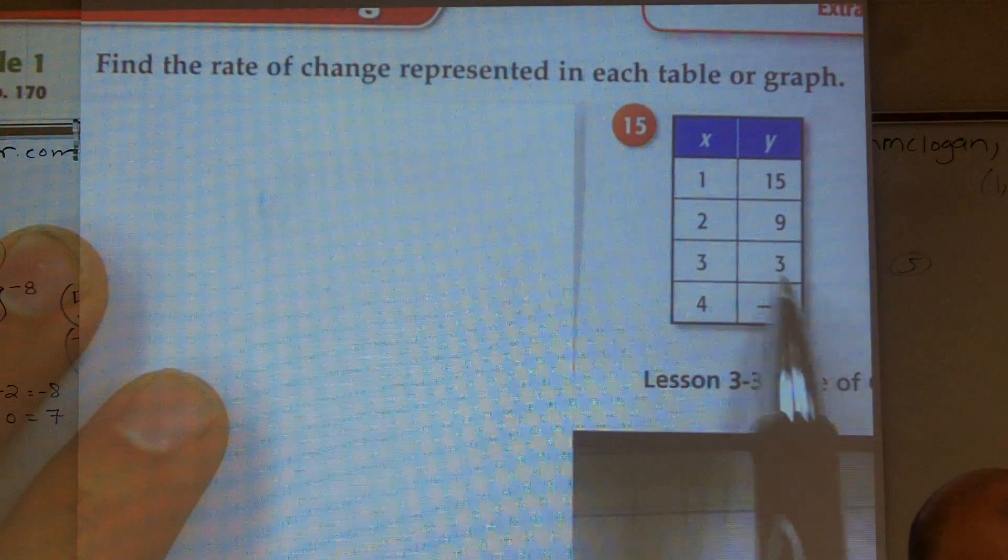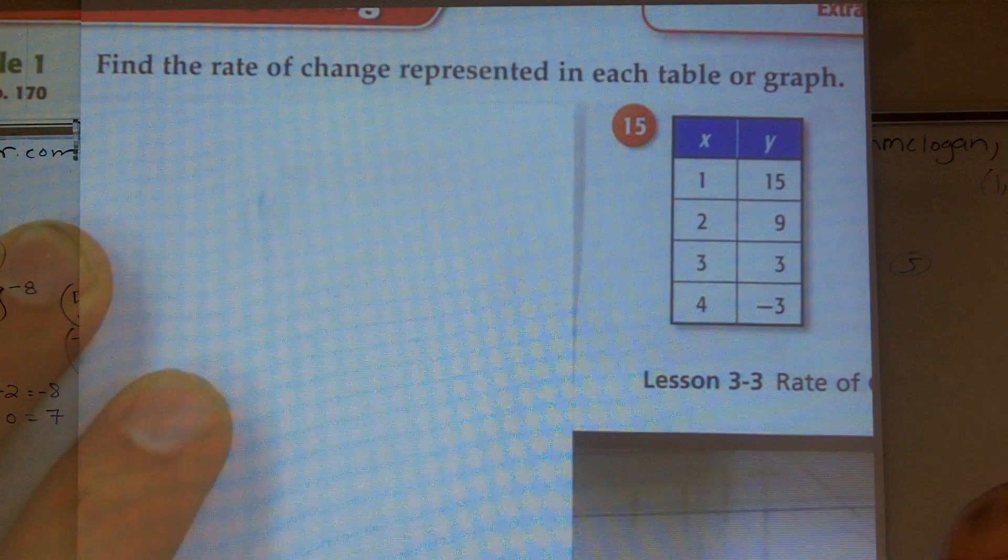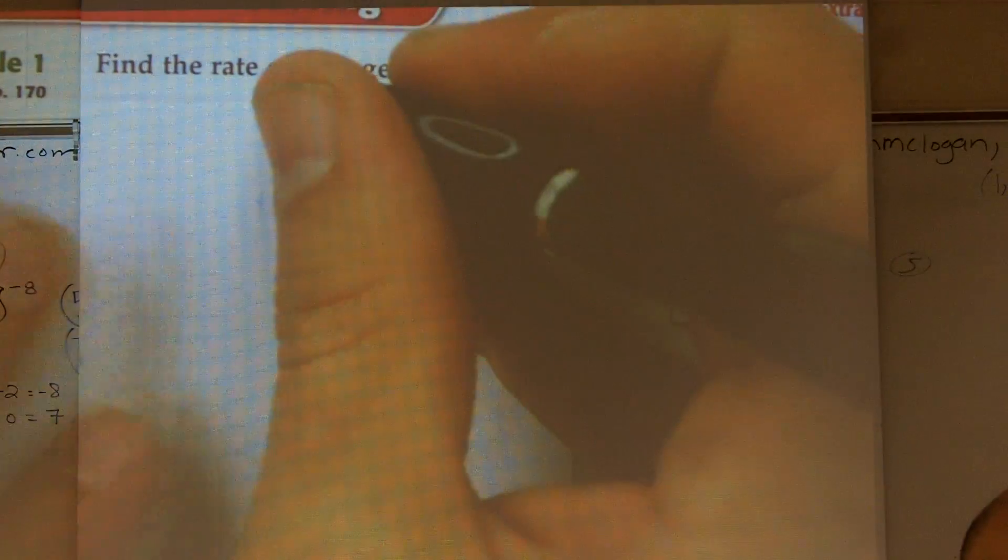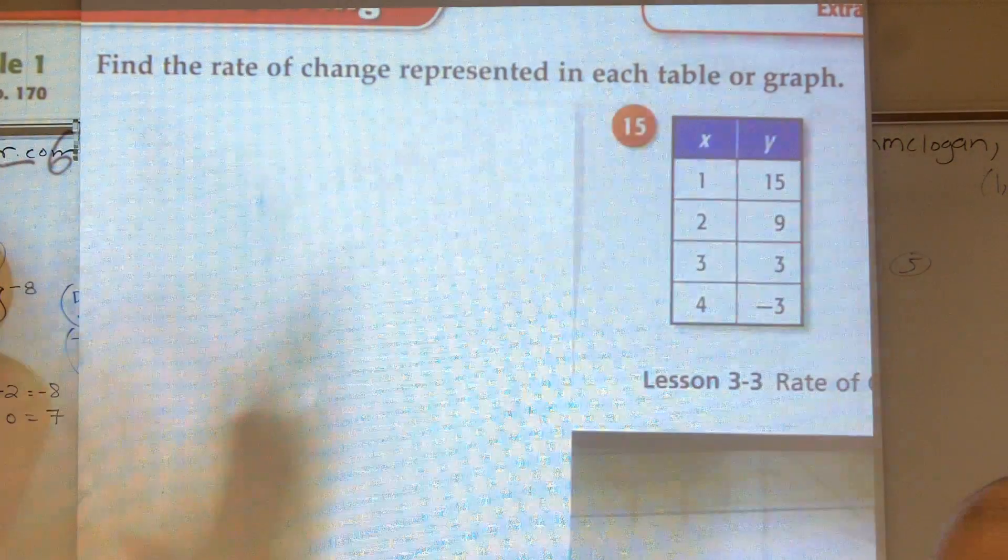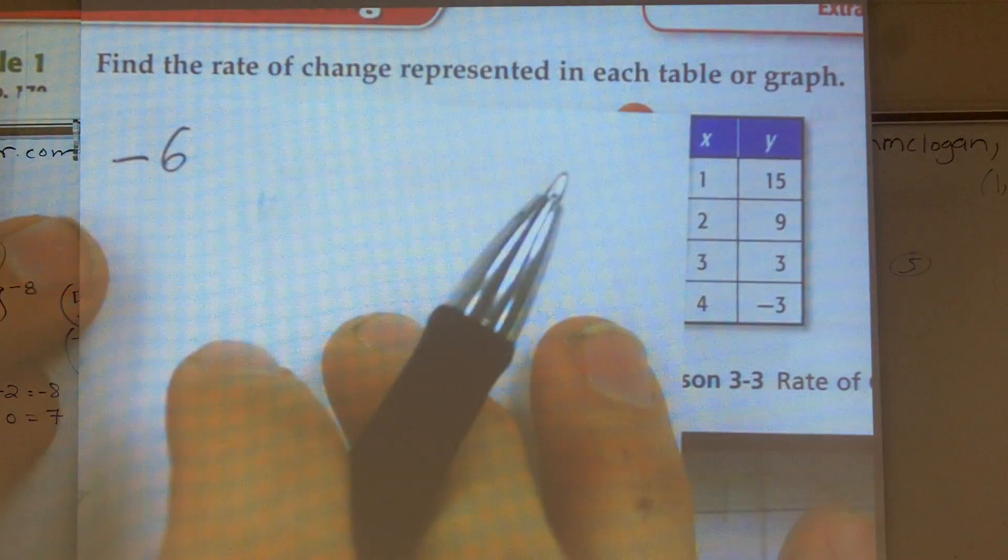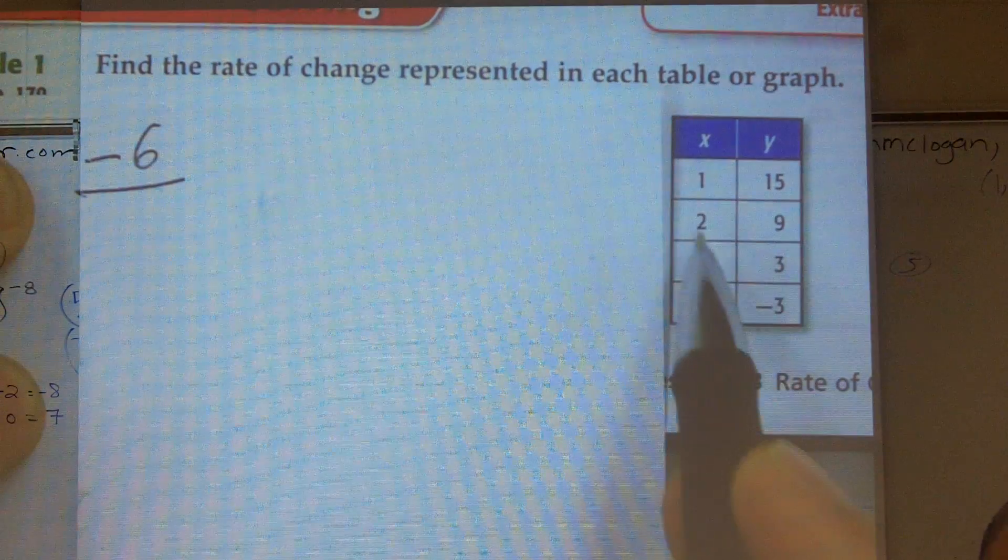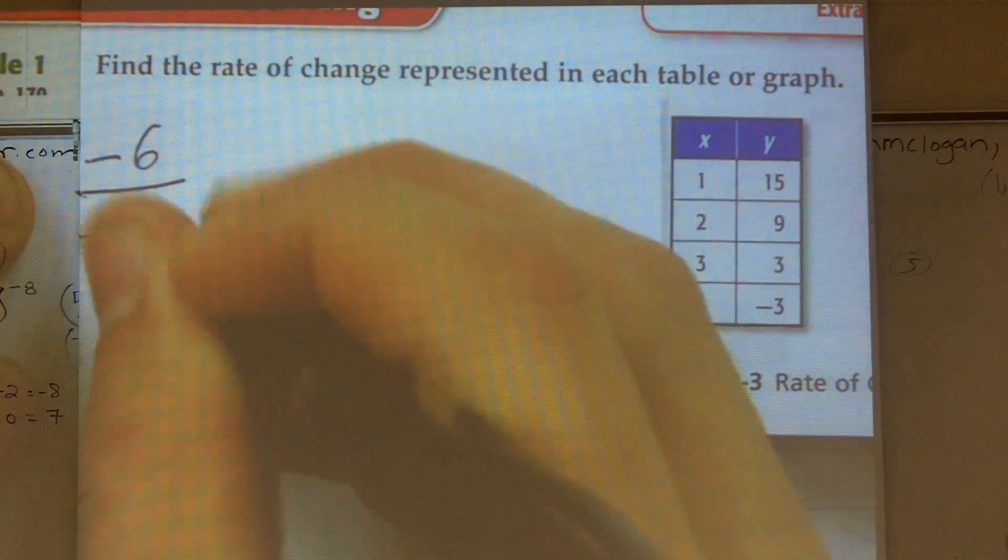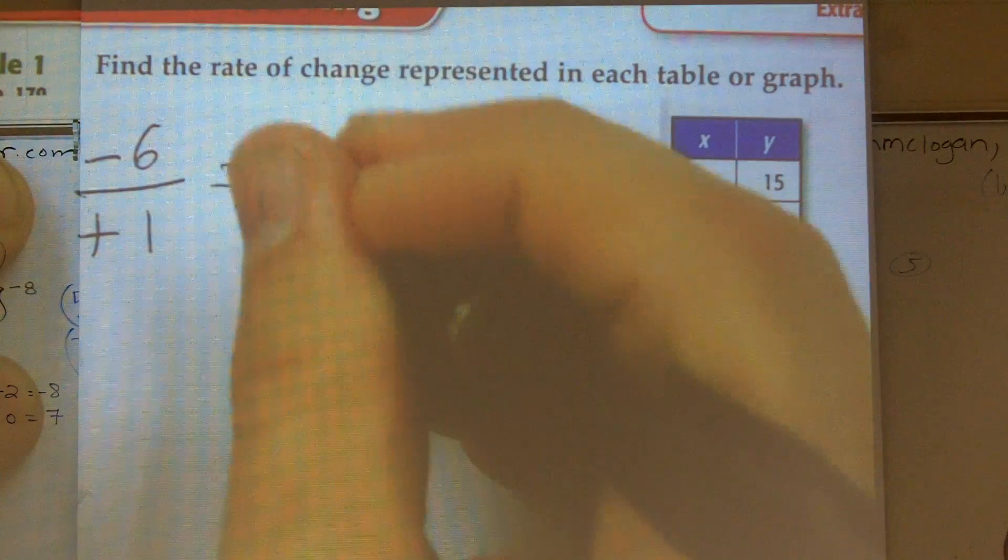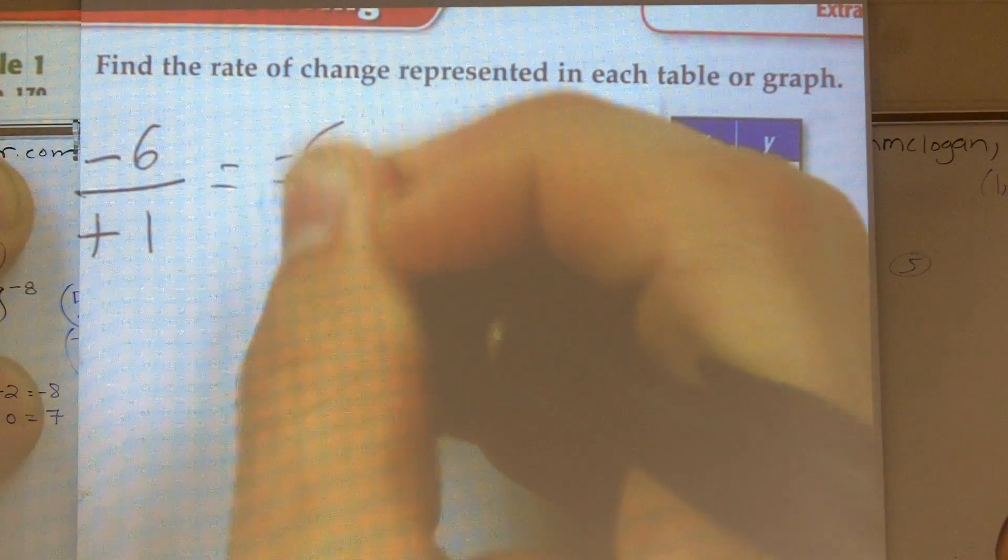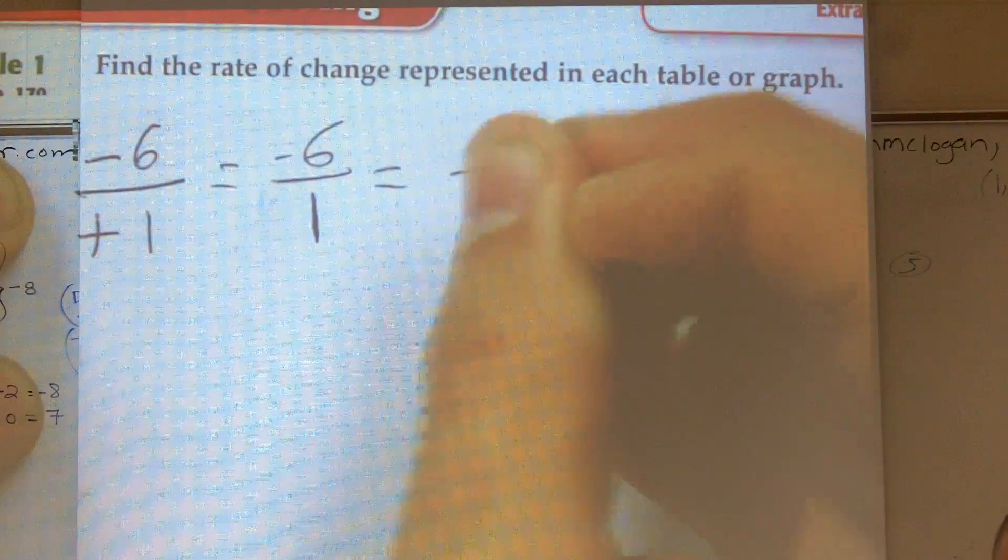As I'm going 15 to 9, 9 to 3, what's happening? I'm going down 6, right? So you could make this very easily just saying down negative 6. And then, over, how are my x values changing? Going up 1. So you could say the rate of change is simply negative 6 over 1, which is equal to negative 6.